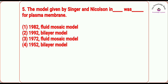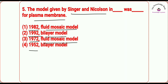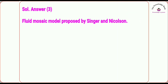Question number five: the model given by Singer and Nicholson for plasma membrane was proposed in which year? The options are: 1982, 1992, 1972, and 1952. You have to focus on the year. The correct answer is option three — 1972, the fluid mosaic model. Singer and Nicholson proposed the fluid mosaic model in 1972.